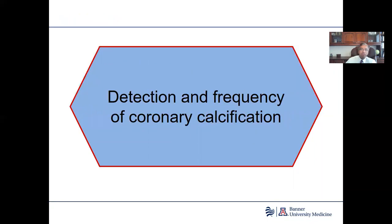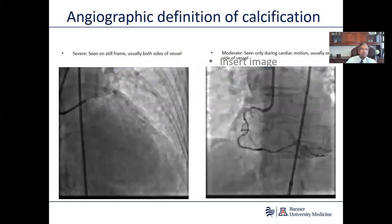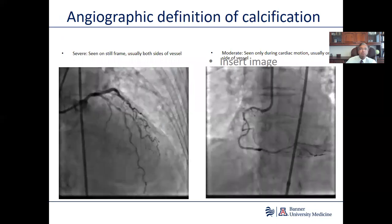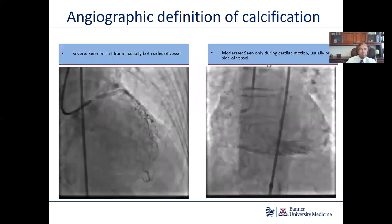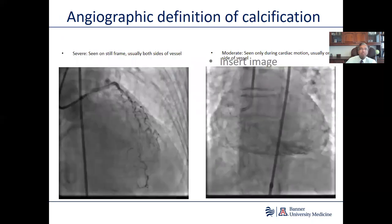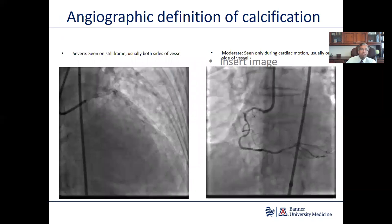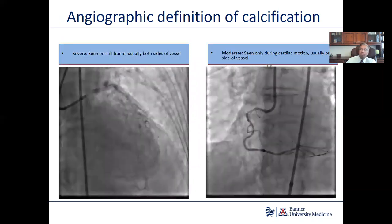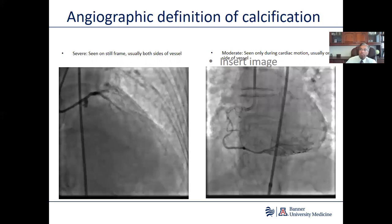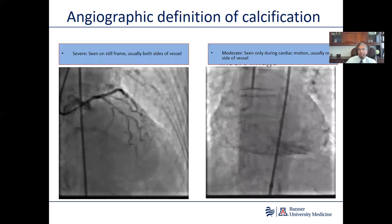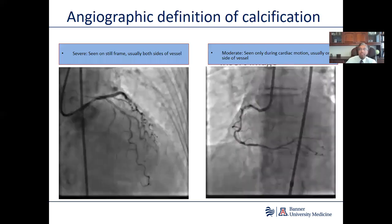Detection and frequency of coronary calcification. Coronary calcification is seen very often. Unfortunately, there has not been a good systematic mechanism to delineate it. On angiography, when the vessel has calcium on both sides and it's seen on the still frame, it's deemed to be severe. On the other hand, when angiography demonstrates calcium just on the cardiac motion and on a single site, by default it's considered to be moderate.